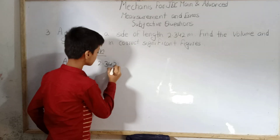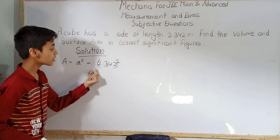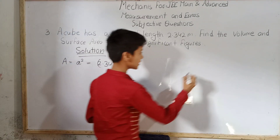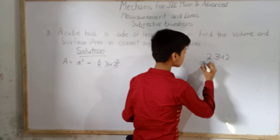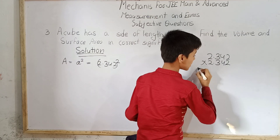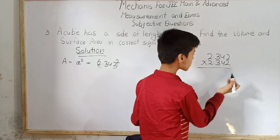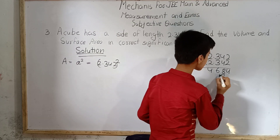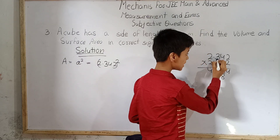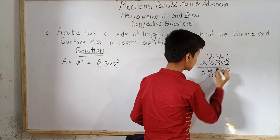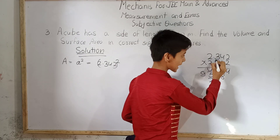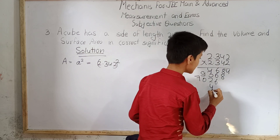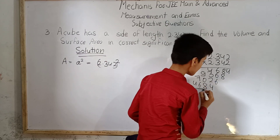So we have A squared equals 2.342 whole squared. To compute this we multiply 2.342 into 2.342. Performing the multiplication digit by digit: 2×2=4, 2×4=8, 2×3=6, 2×2=4; then 4×2=8, 4×4=16 (carry 1), 4×3=12+1=13 (carry 1), 4×2=8+1=9; and so on for the remaining digits.